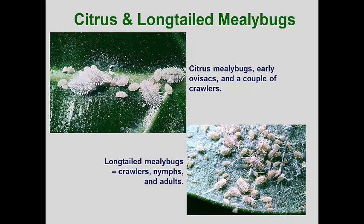Citrus mealybugs can reproduce parthenogenically, but males occasionally occur. Females produce large conspicuous ovisacs in which 300 to 600 eggs are deposited. The eggs take about 10 days to hatch, and nymphal development takes 50 to 60 days. Long-tailed mealybugs have males and mating is obligatory. However, females don't produce an ovisac as they appear to be ovoviviparous — the females produce individual eggs that immediately hatch. Each female can produce about 200 offspring, which take 2 to 3 months to mature. The citrus mealybug generally produces more honeydew than the long-tailed mealybug, and both can occur outside in tropical and semi-tropical zones.